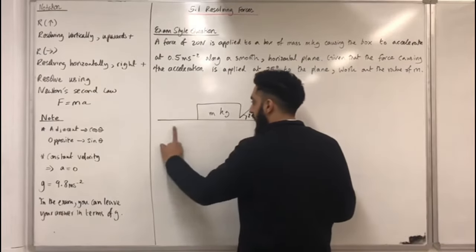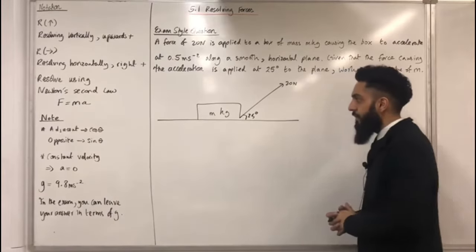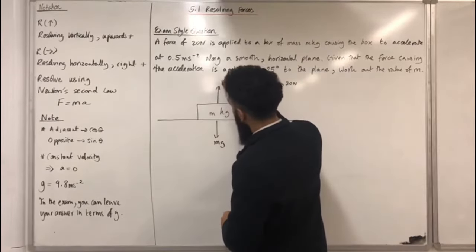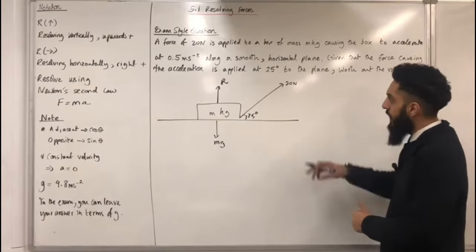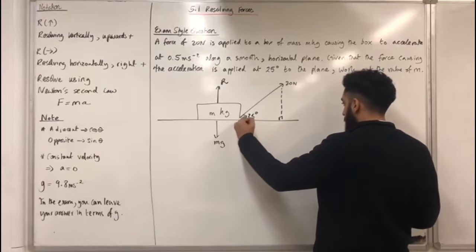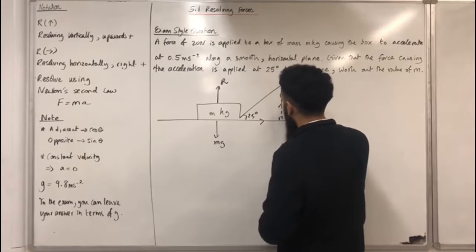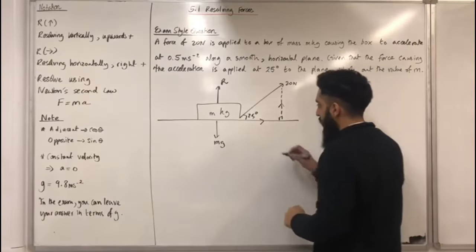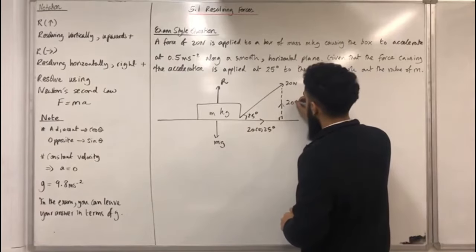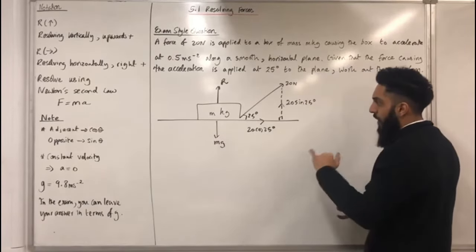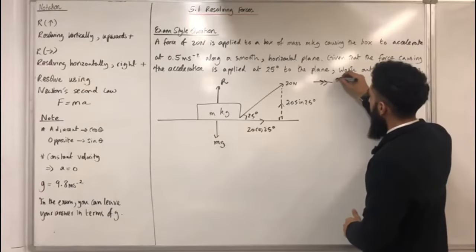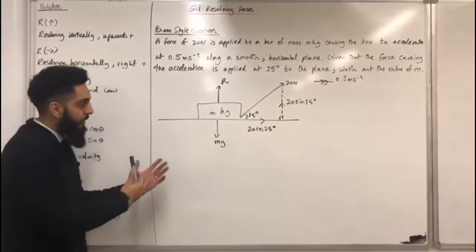Because the horizontal plane is smooth, there is no friction acting between the plane and the box. We have the weight of the box, mG, the normal reaction R, and the component forces of the 20 Newton force. Forming a right-angle triangle: the horizontal component is 20 cos 25 degrees, and the vertical component is 20 sin 25 degrees. The box accelerates to the right at 0.5 metres per second per second. That is my complete force diagram.